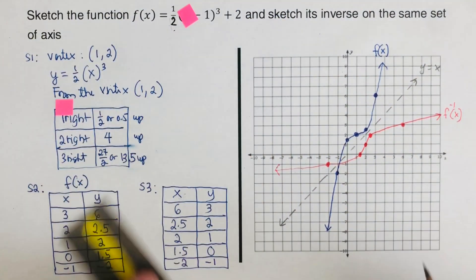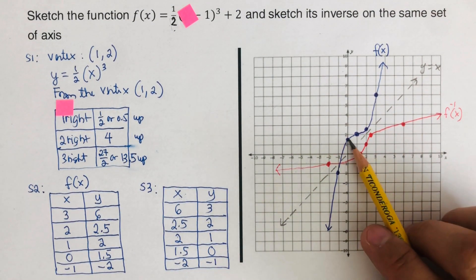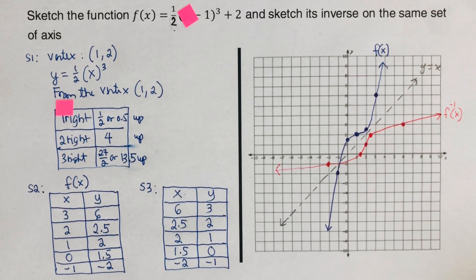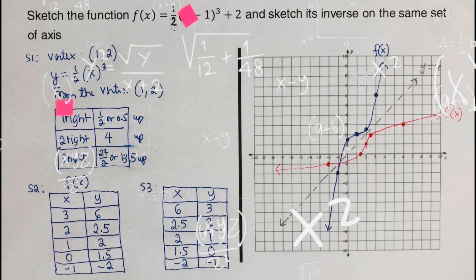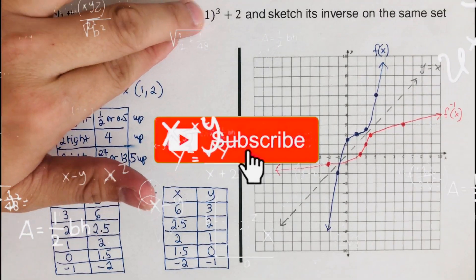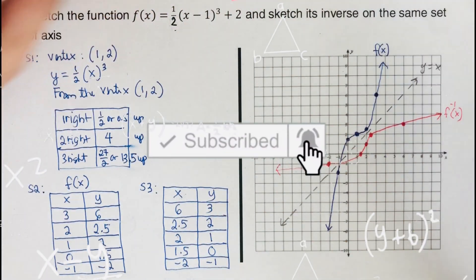This is our f⁻¹(x) and this is our original f(x). Once we fold along y = x, these two are symmetric to each other. If you got the same answer, great! If you found this video helpful, hit like and subscribe for more math videos.